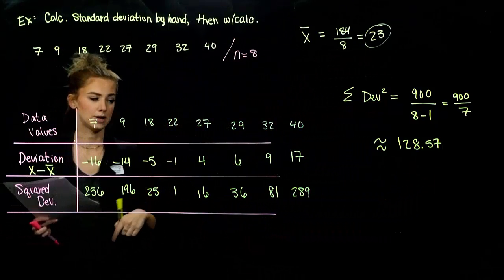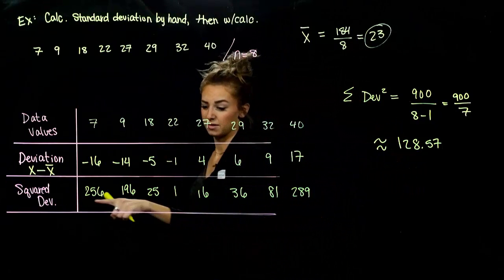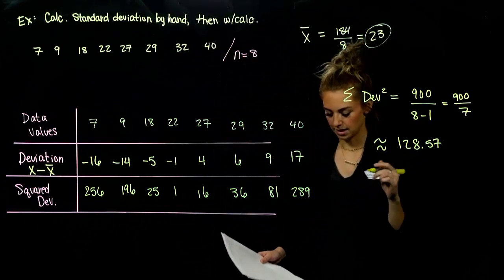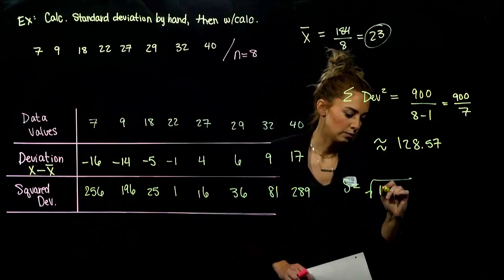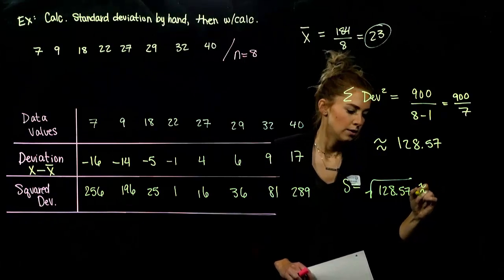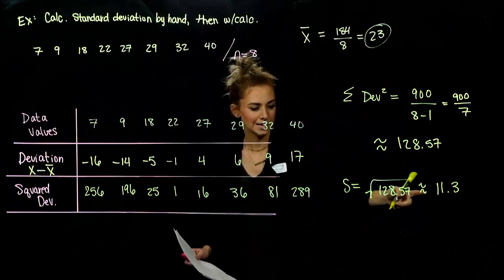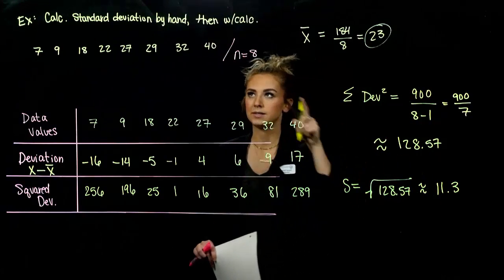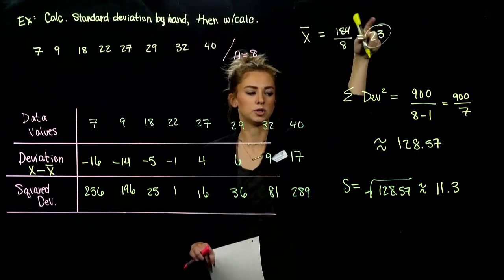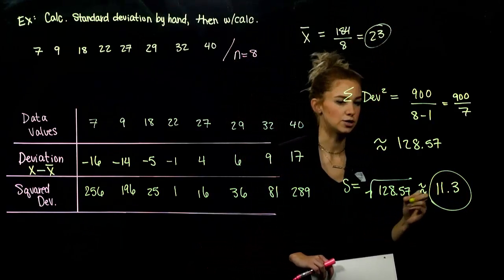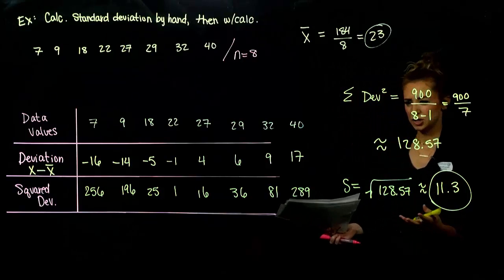We want the standard deviation, not just the variance. The variance is what's underneath the radical — throughout the process we squared everything, so we want to undo that at the end. The standard deviation S is the square root of 128.57, which is approximately 11.3. So on average, each of these data values is 11.3 units away from the mean of 23. This is the average deviation from the mean. We calculated it by hand — it's manageable, just a process, a little bit lengthy.